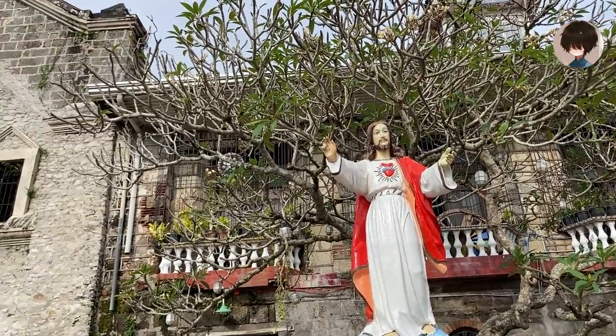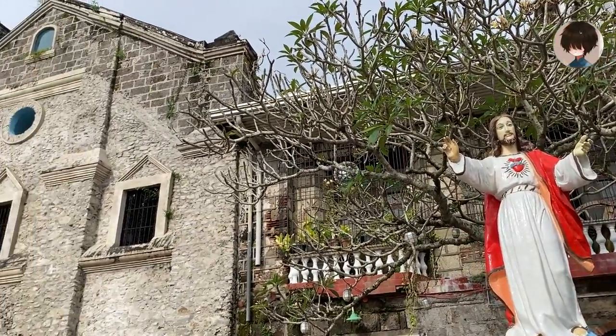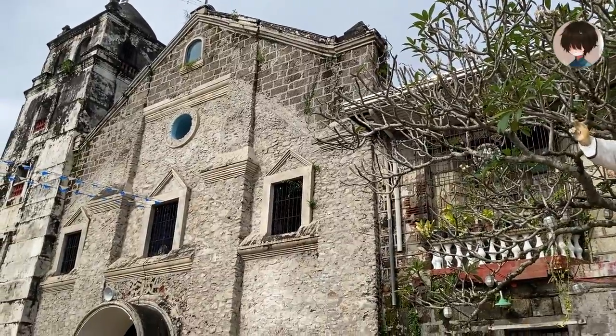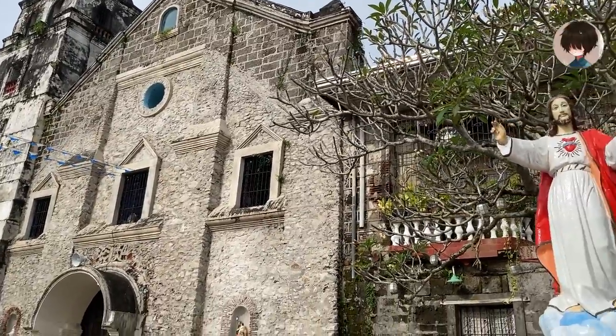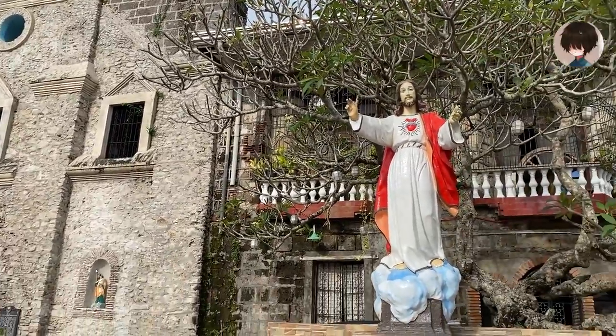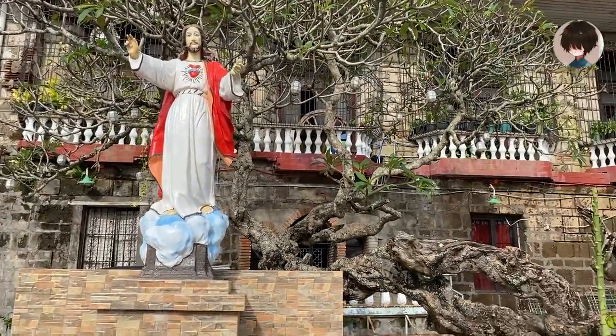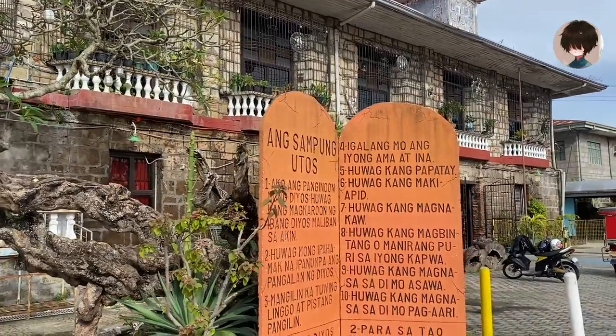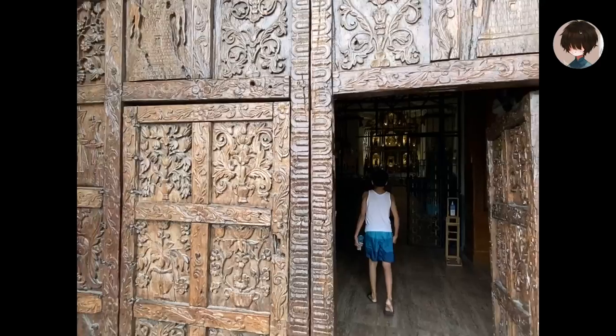After 1860, the Recollects added windows with colored glass panes, and set these in a wooden frame decorated with a quail on a plate — the attribute of San Nicolas de Tolentino.